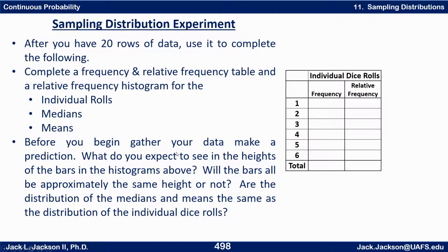After you have the 20 rolls of data, use it to complete the following: complete a frequency and relative frequency table and a relative frequency histogram for the individual rolls. If you do it 20 times with five dice each, that's actually a sample size of 100 individual dice rolls. The total frequency should be 100, and the relative frequency should sum to one.